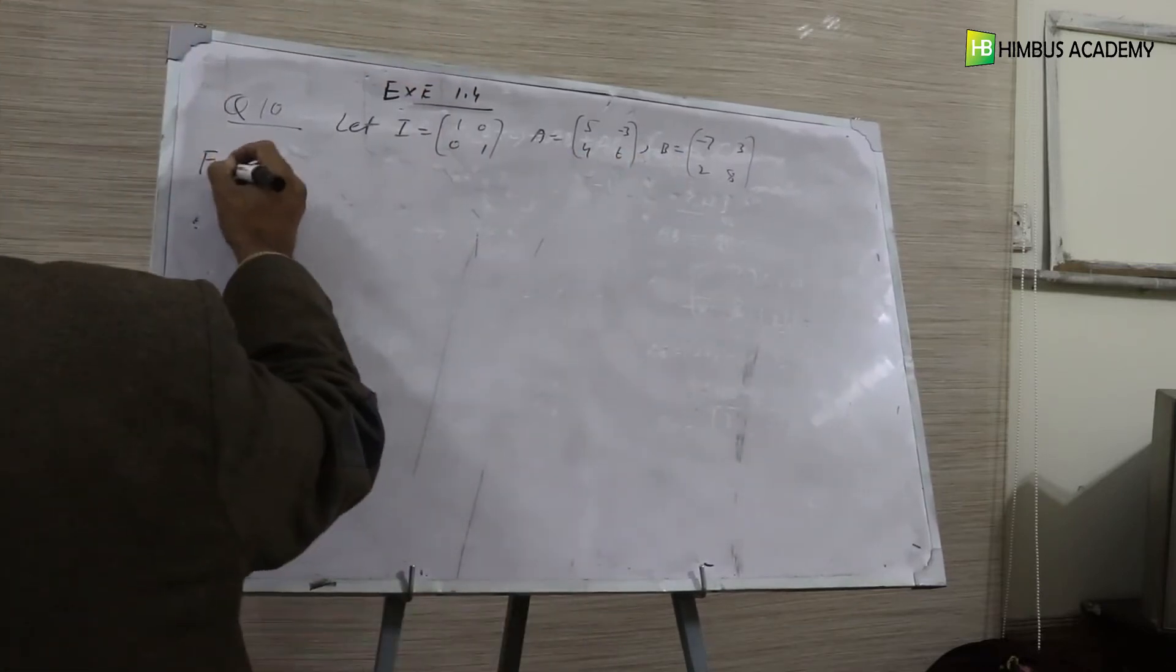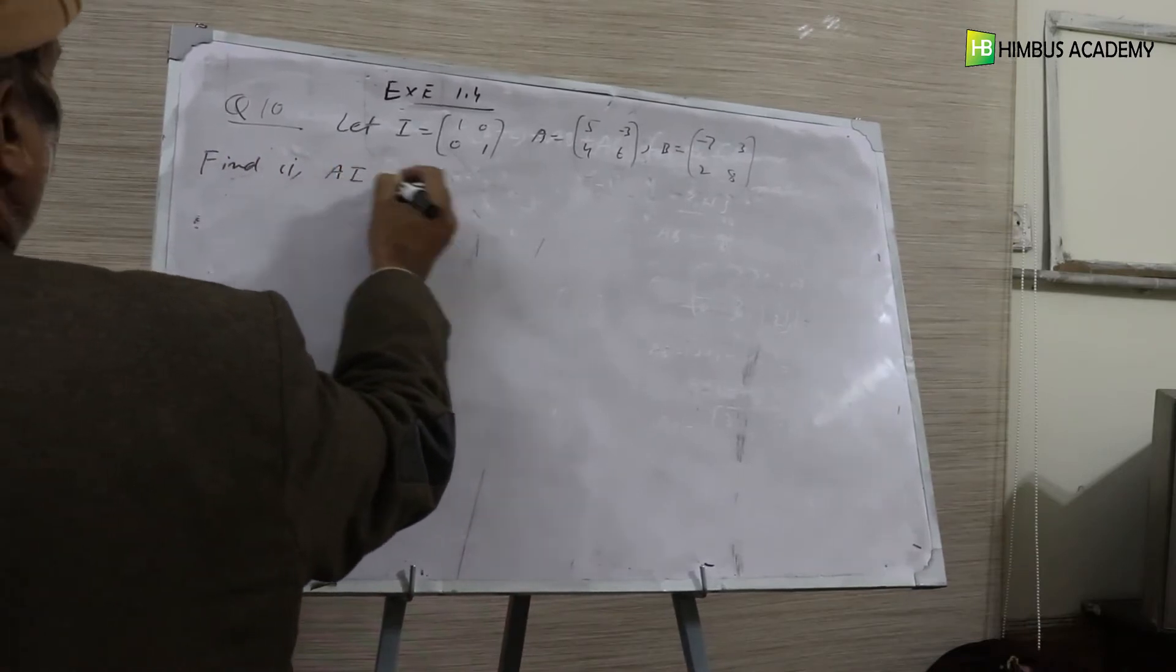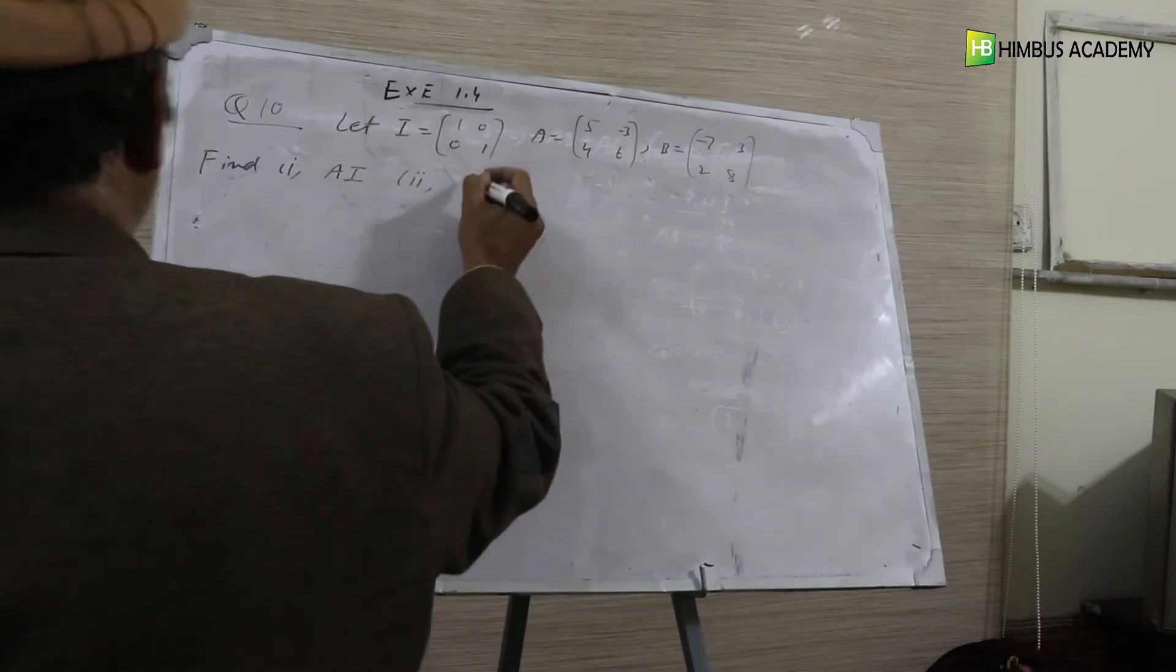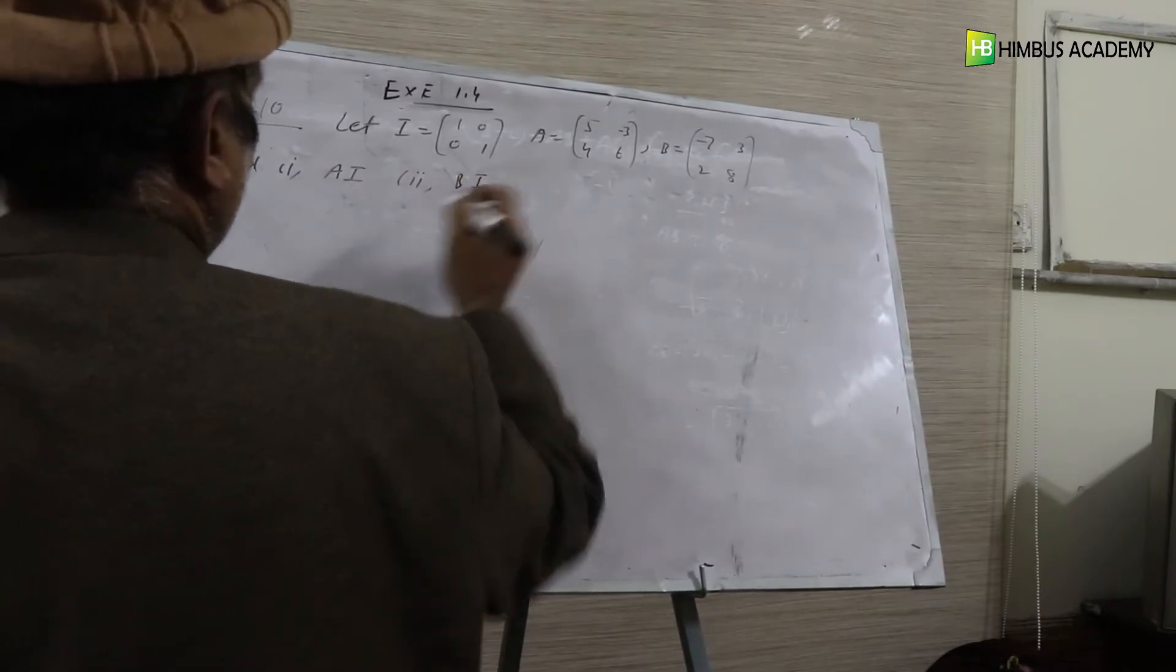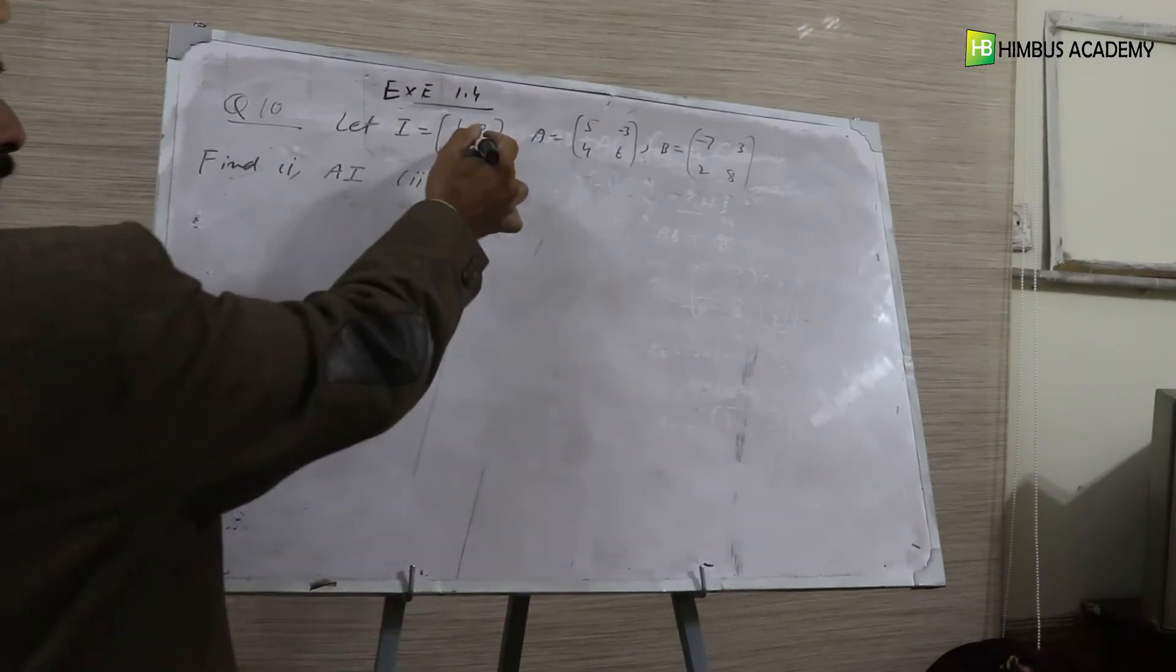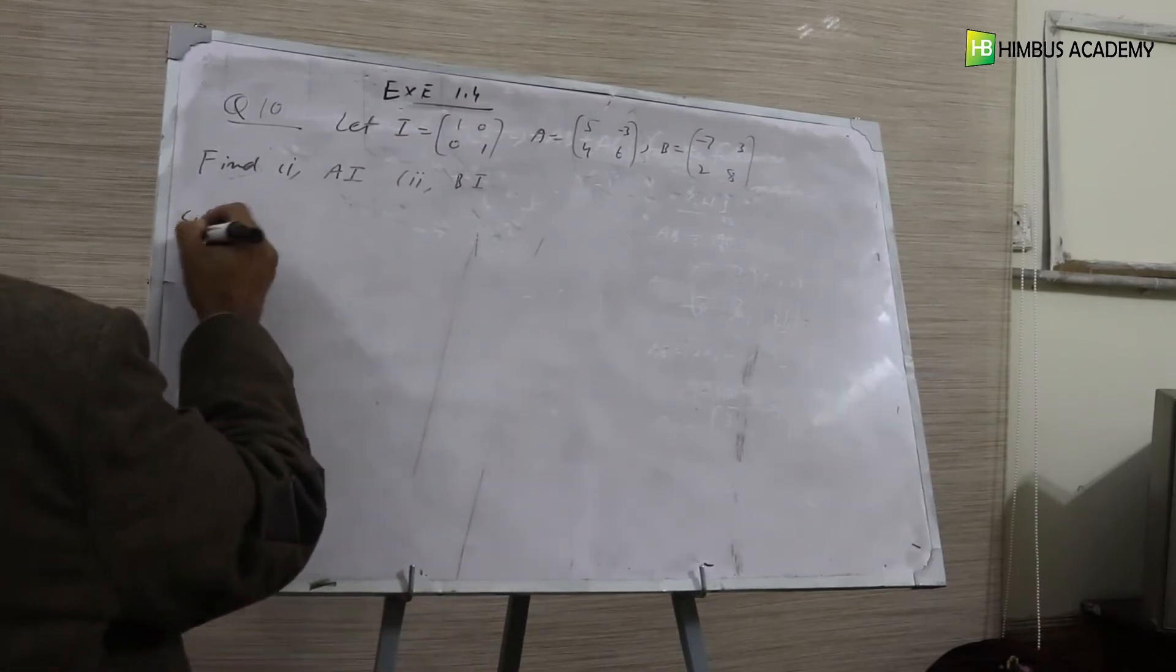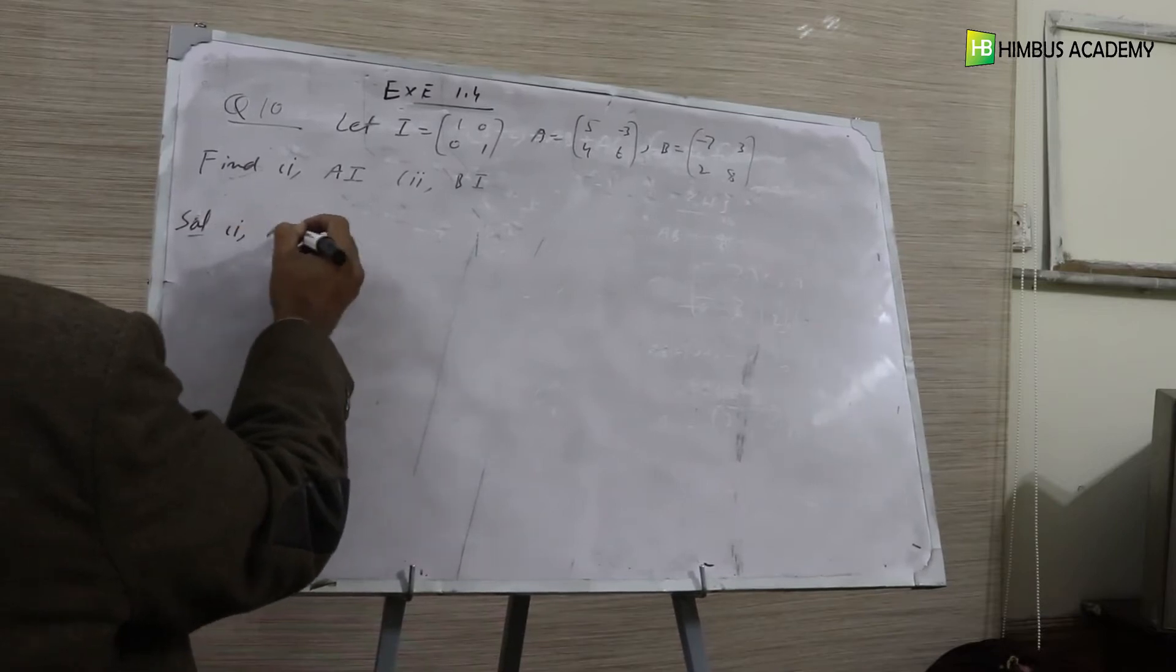Find number 1, A, I, number 2, B, I. I is the identity matrix, 1 0 0 1. We are asked to find A, I. Solution number 1, A, I.